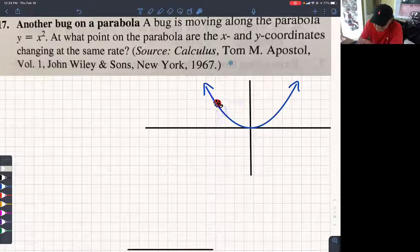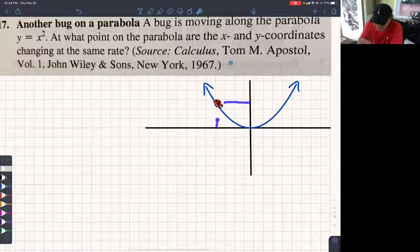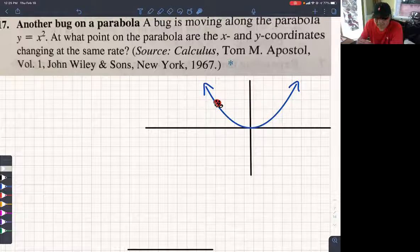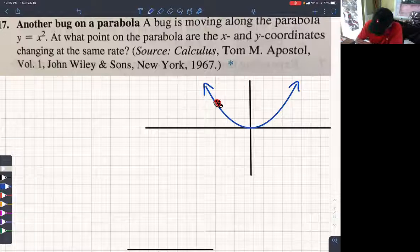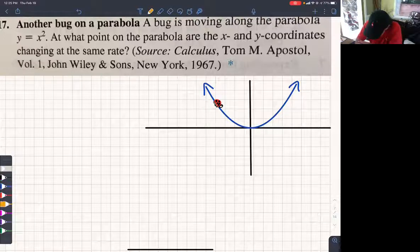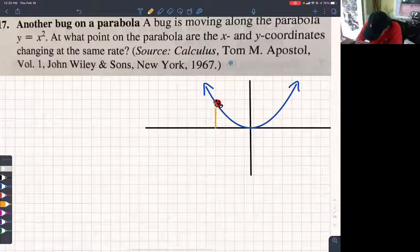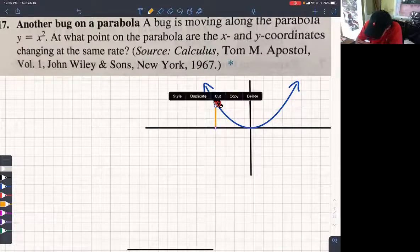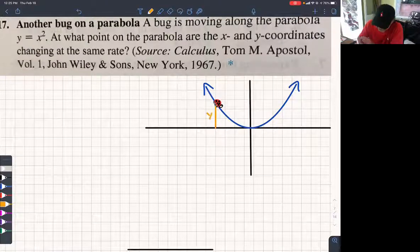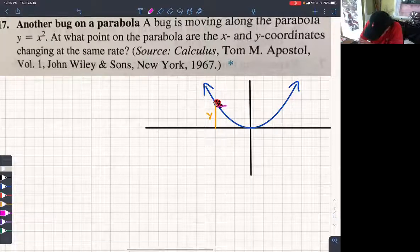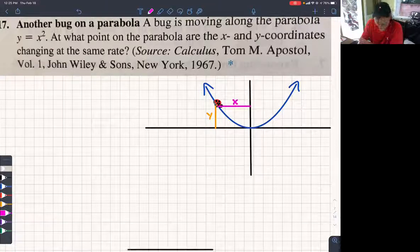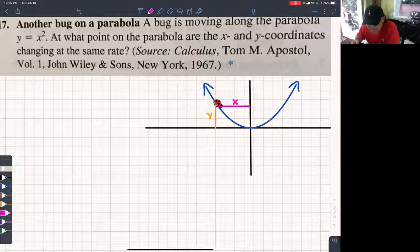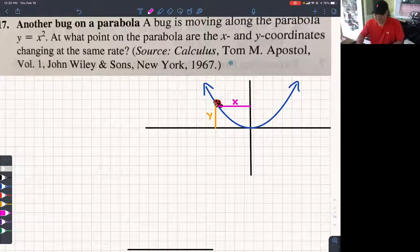So his distance, this distance would be x and this distance would be y. And they want to know when those are changing at the same rate. Okay? So as the bug moves, let me draw stuff here. That distance is y and that distance we call x.